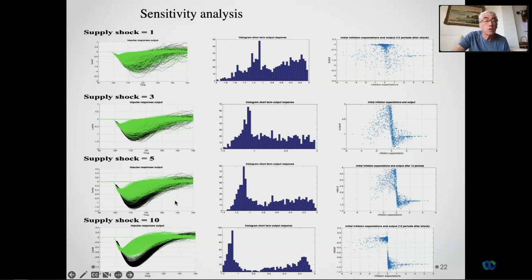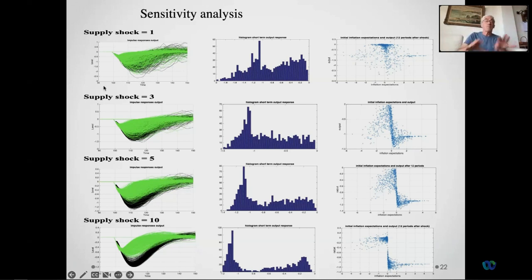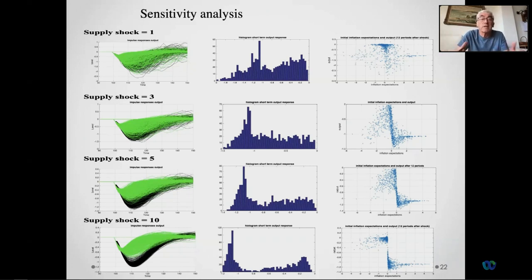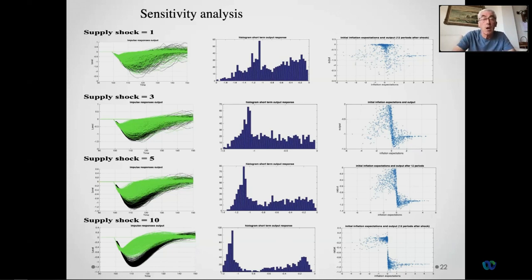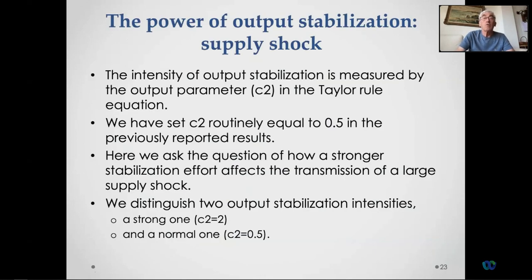For sensitivity analysis on supply shock size: the 10-standard-deviation result is the largest case. As the supply shock becomes smaller, the bifurcation tends to disappear. However, even with relatively small supply shocks, you don't get anything near a normal distribution, which creates great uncertainty about how to forecast these impulse responses.